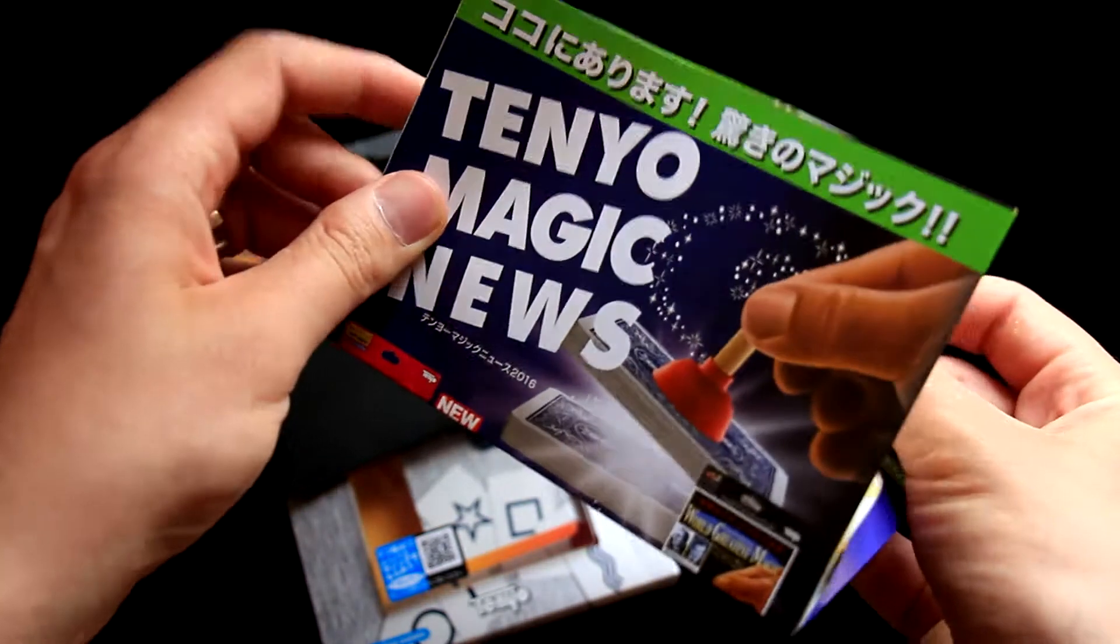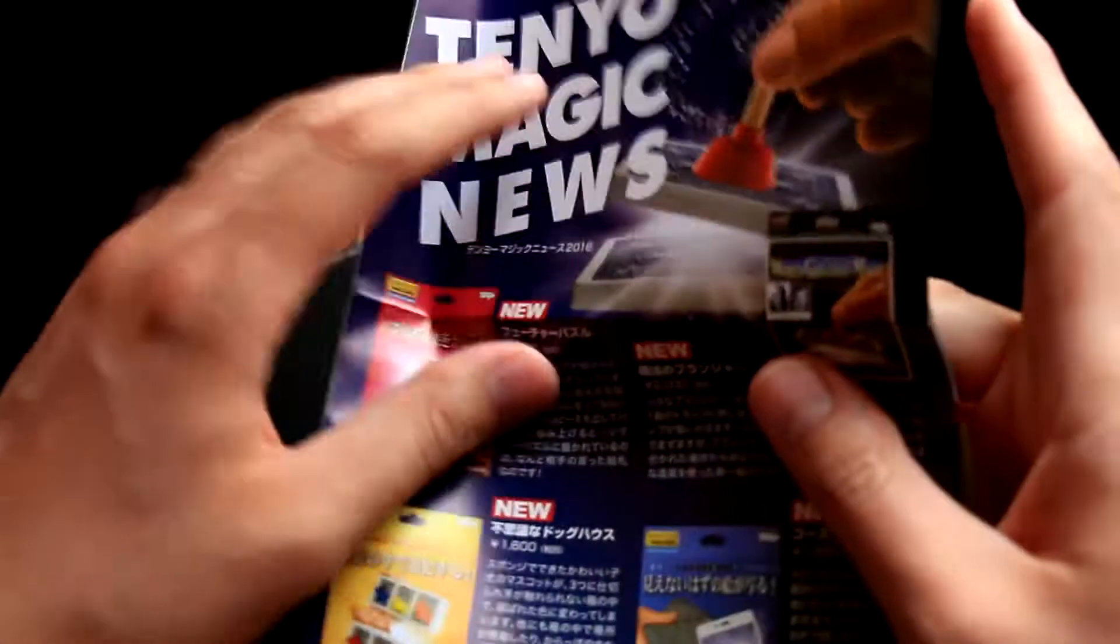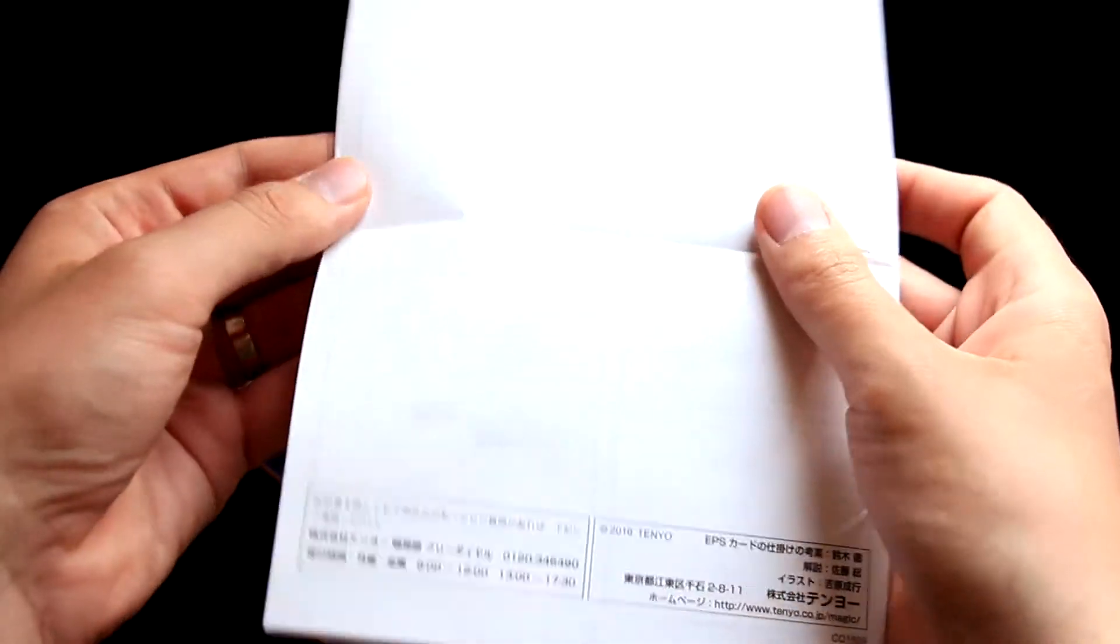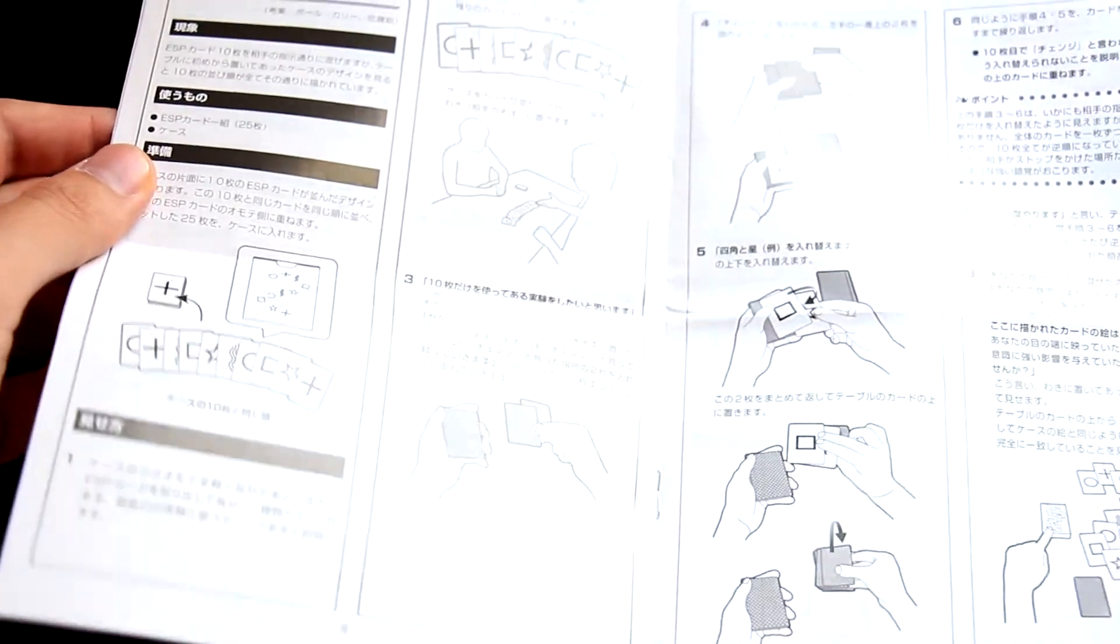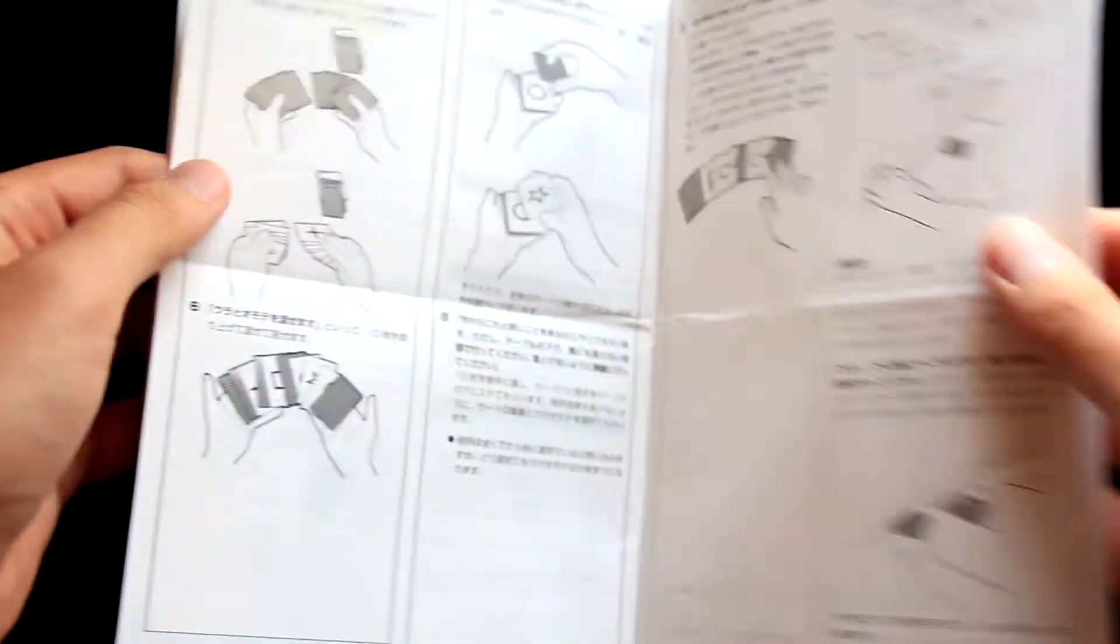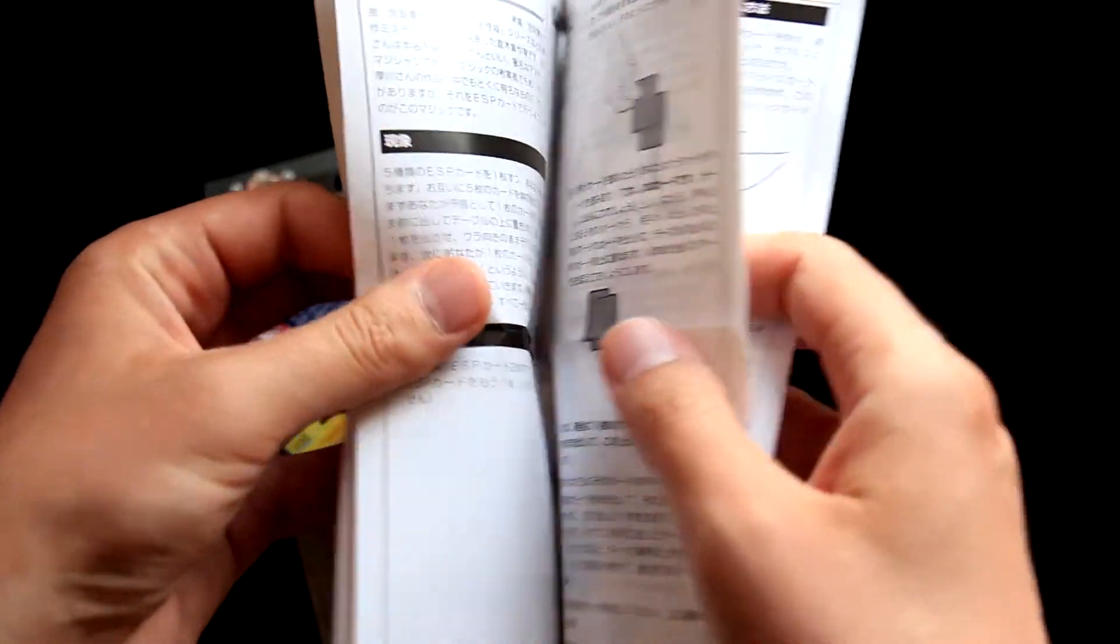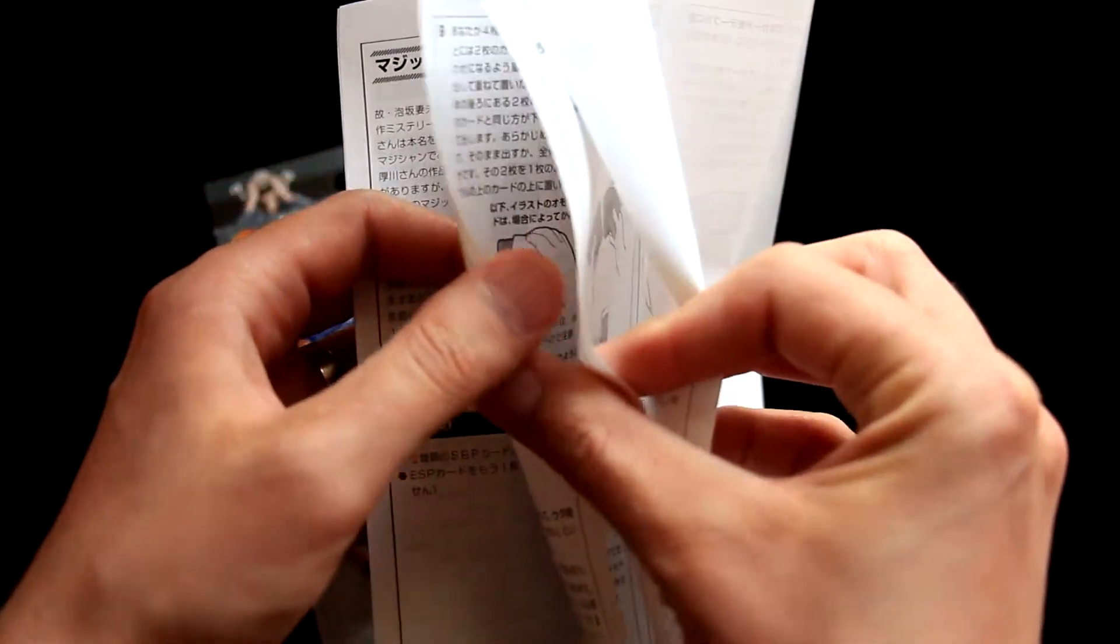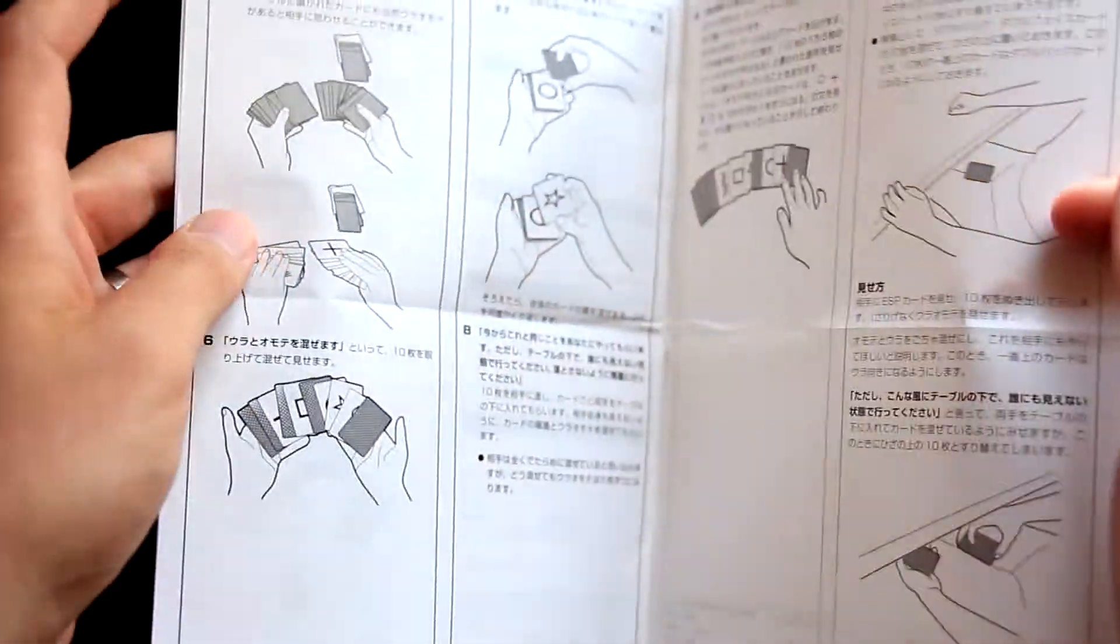And then we receive this Tenyo Magic News, it's just about new Tenyo products, so some advertisement. And then finally we receive the instructions. They are in Japanese but you can download the English version as well. You can see there are some instructions for a few tricks you can do with this deck. You will download English instructions, they are only text instructions in English in PDF, and the illustrations are available only in this printed form.